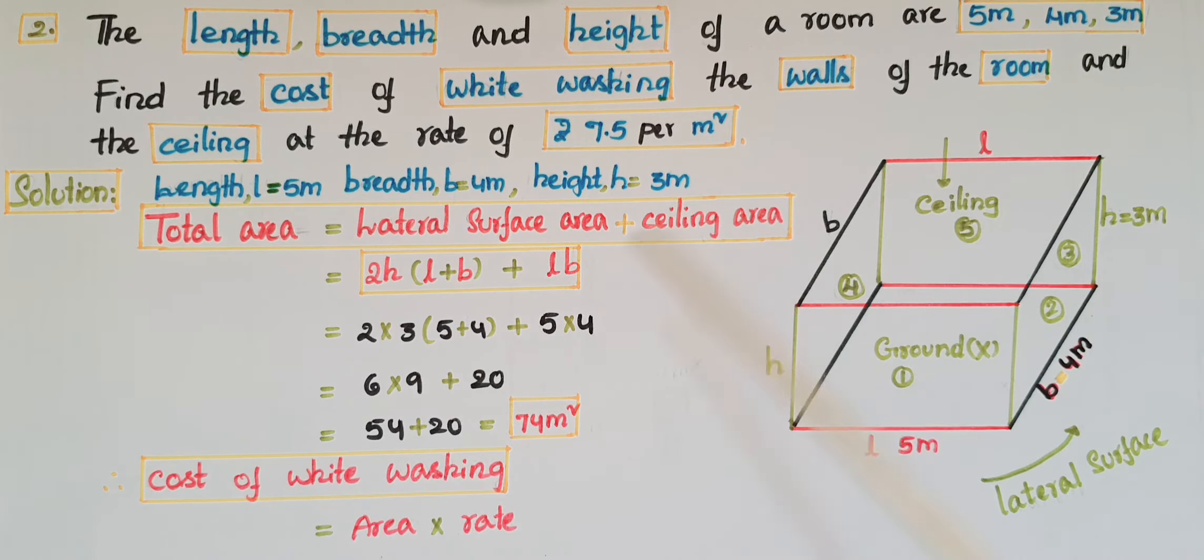Substituting the values: 2×3×(5+4) + 5×4 equals 6×9 + 20, which is 54 + 20, equals 74 meter square. This is the total area of the four walls including the ceiling.